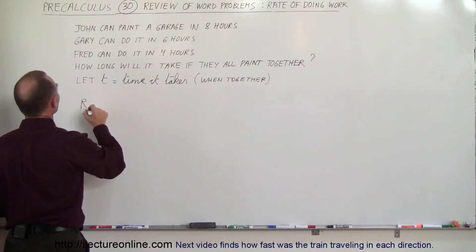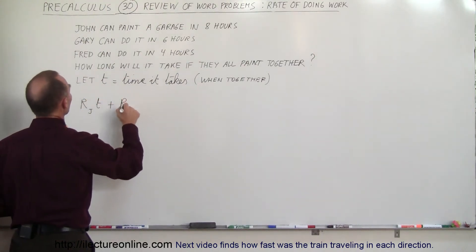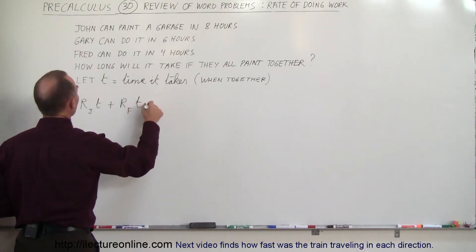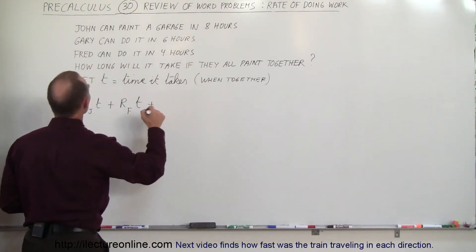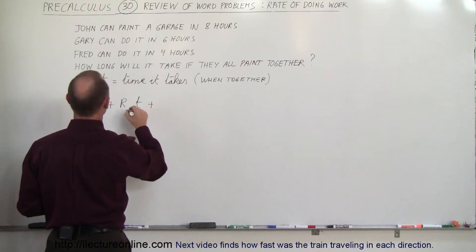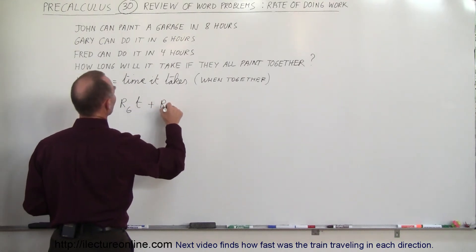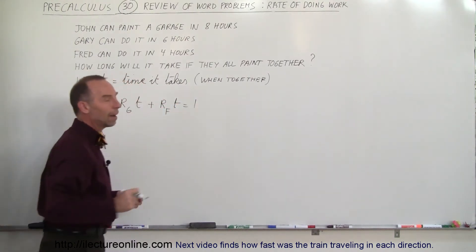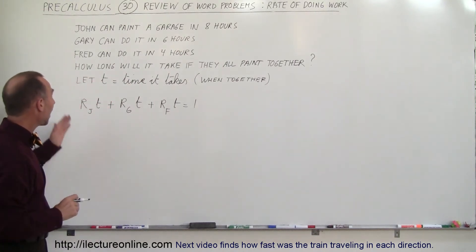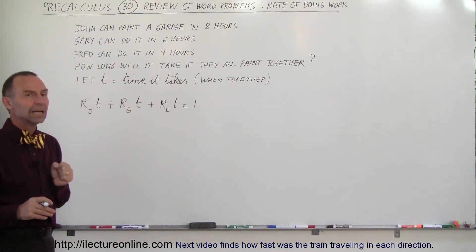So the rate of John times the time plus the rate of Fred times the time plus the rate of Gary, well, I kind of mixed it around and I'll put Gary first, plus the rate of Fred times the time is equal to the whole job. So now we have to figure out how fast each painter paints.